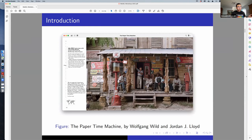A great book you can search on the internet is The Paper Time Machine by Wolfgang Wilde and Jordan Lloyd. Jordan Lloyd is one of the artists influencing this area, and he's doing everything you see in this picture by hand. This picture was taken in black and white, and what you see is his work.